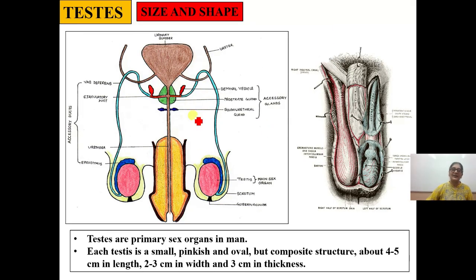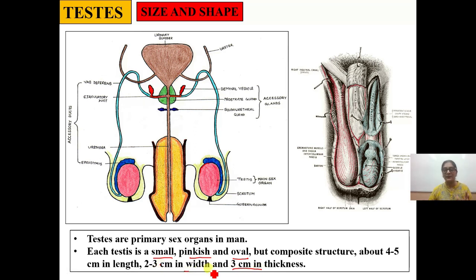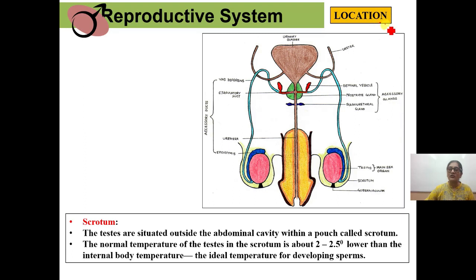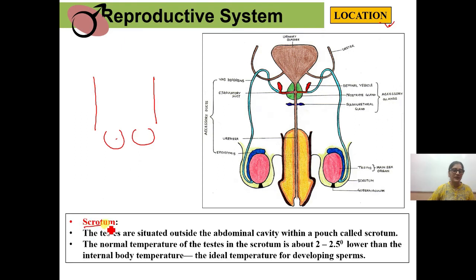Now let us start with the primary sex organ — the testis. What is its shape and size? You can see it is a small, oval, pinkish-colored structure. Its dimensions are about 2 to 3 centimeters. Regarding its location: in human beings, the testis is found in a bag-like structure called the scrotum.